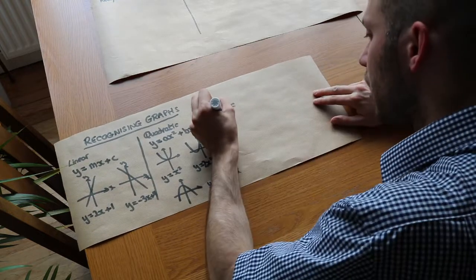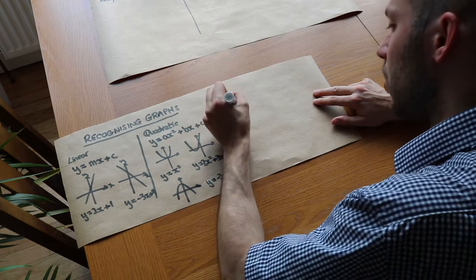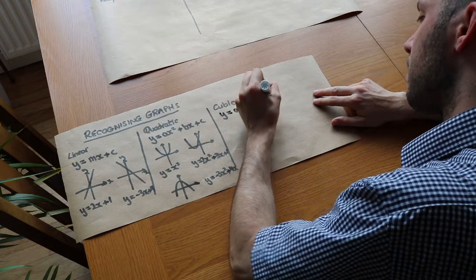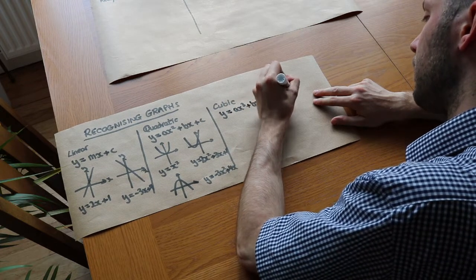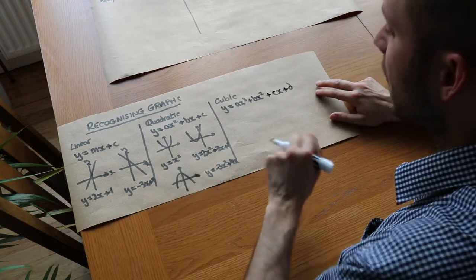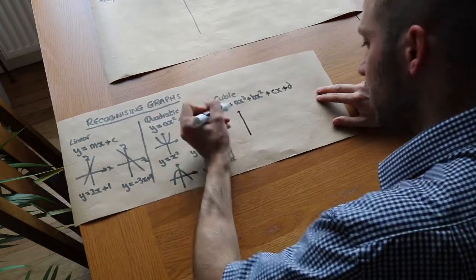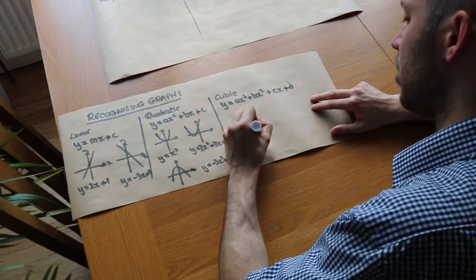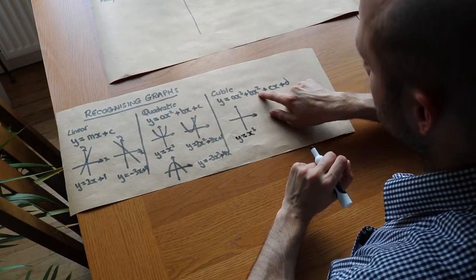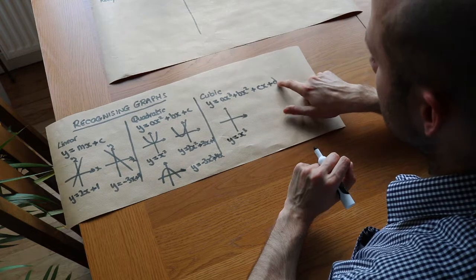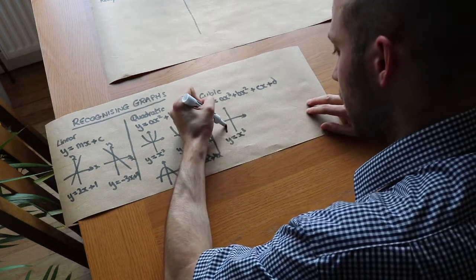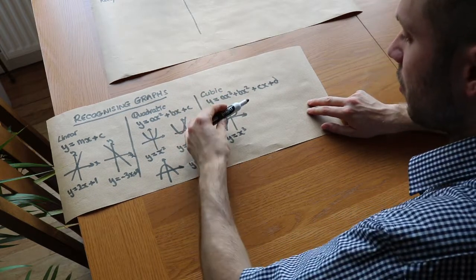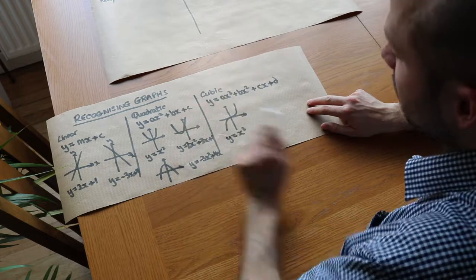Now, cubic graphs. The general form of a cubic equation is y equals ax cubed plus bx squared plus cx plus d. Just like with quadratics, the most basic example is y equals x cubed. We still have the x cubed term, but b is 0, c is 0, and d is 0. That looks like a shape that levels out in the middle — it kind of plateaus — and then goes back up. We call that a point of inflection.